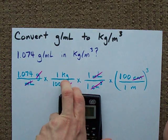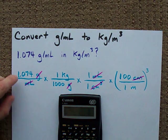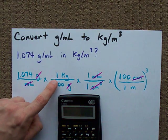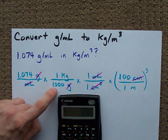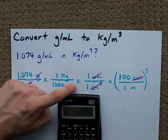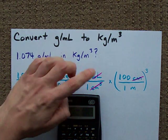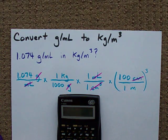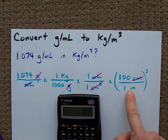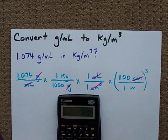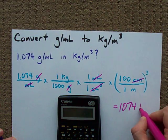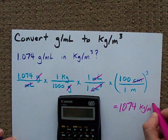Now all I have to do on my calculator is type in exactly what I see. 1.074 times 1 divided by 1000 times 1 divided by 1 times 100 cubed divided by 1 cubed. The answer that I end up with is 1074 kilograms per meter cubed.